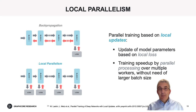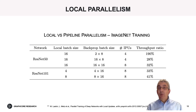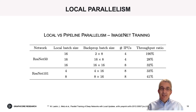The speed-up from local parallelism is significant not only in situations where the overall batch size is the same as in pipeline parallelism, but also when the constraint is to maintain the same local batch size. The advantage is not only improved throughput, but also the fact that local parallelism does not rely on an increased batch size, so it does not reduce the limited range of batch sizes that can still be exploited by data parallelism.